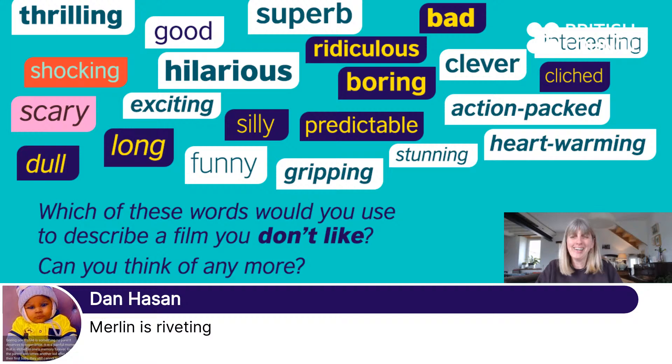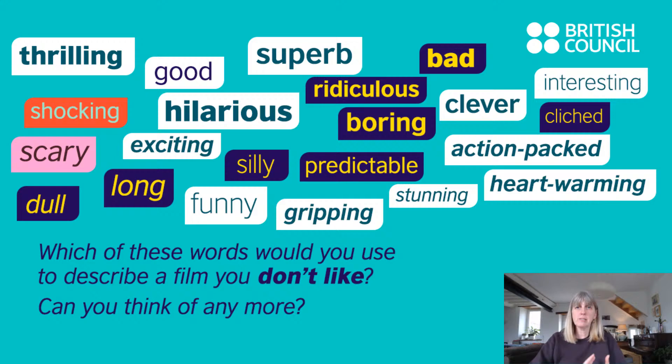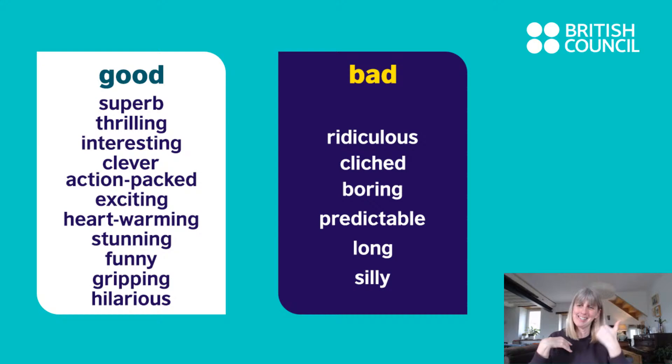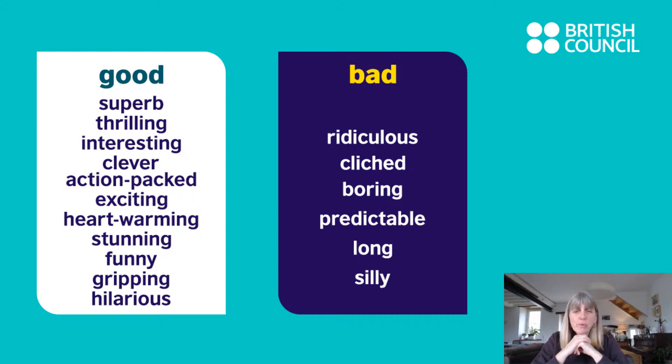Merlin is riveting — riveting and gripping mean sort of the same thing. Let's put those adjectives into two categories: good and bad. Good: superb, thrilling, interesting, clever, action-packed, exciting, heartwarming, stunning, funny, gripping, hilarious. Bad: ridiculous, cliched, boring, predictable, long, silly, dull. When we say long, we mean it's too long — like Oppenheimer. I didn't watch it because I heard it was very long, though other people loved it all the way through. Dull is a synonym for boring.